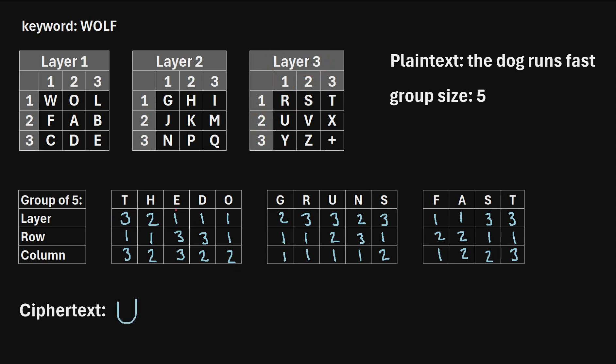Next we move on to the next three numbers — still working with this first group. The next three numbers are these first two, then continuing to the next row for the third: one, one, one. So we go to layer one, row one, column one, and find what character corresponds to that. That's a W. So W is the next letter in our ciphertext.